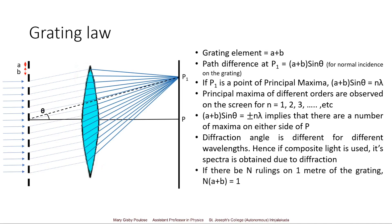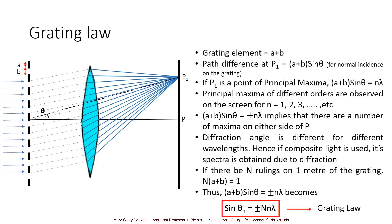If there are N rulings on one meter of the grating, we can write: 1 = N(a + b). Hence the grating equation can be rewritten by substituting for (a + b) as sinθ_n = ±Nnλ. This is called the grating law.